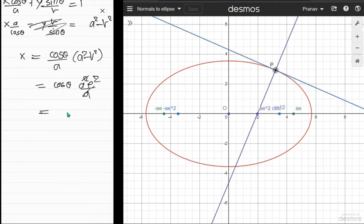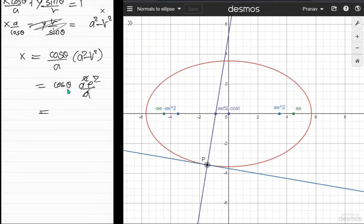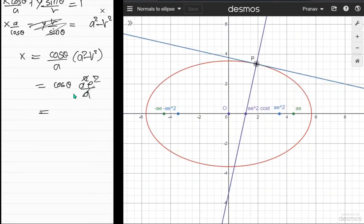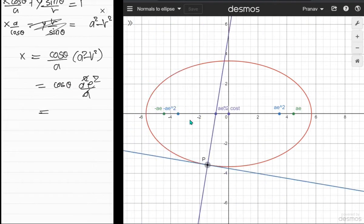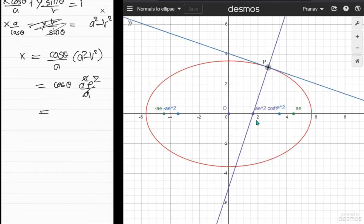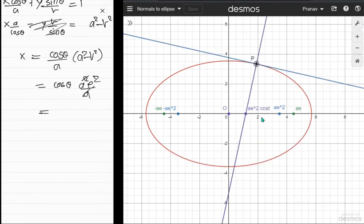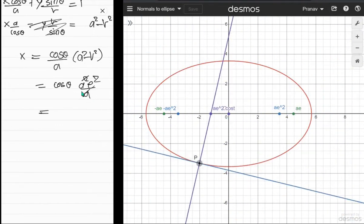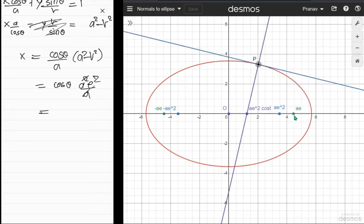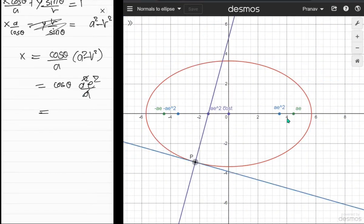simple harmonic motion because theta is changing linearly with time, and that's why it's doing SHM. The amplitude of this SHM is ae², and that's exactly what you see—it oscillates to the extreme value, then goes back. These extreme values are at x